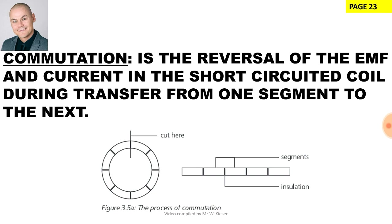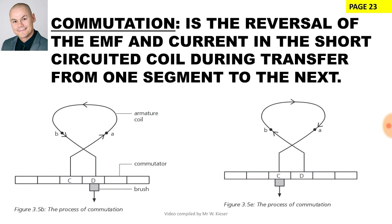The definition of commutation: commutation is the reversal of the EMF and current in the short-circuited coil during transfer from one segment to the next. Here we have a two-dimensional view of a commutator with each segment divided up. The commutator is usually made of copper and insulated by a material called mica. As the brush moves from point C to point D, the alternating current changes direction — hence the term, the reversal of EMF and current through the short-circuited coil.